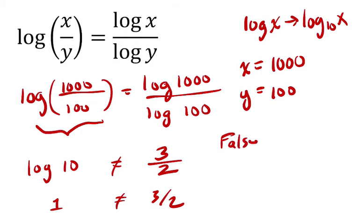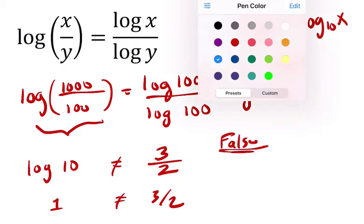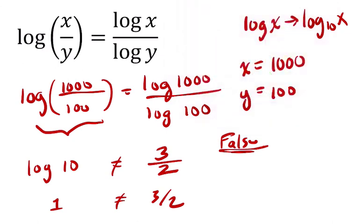And instead, what is the true statement? Let's get green for true. I feel like it's very necessary to use green for true. What is the true statement?